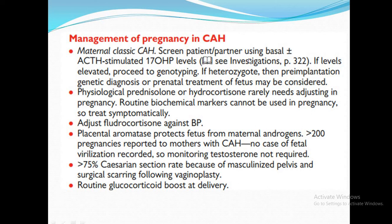For pregnancy management, screen the patient and partner using basal and ACTH-stimulated 17-hydroxyprogesterone levels. If elevated, proceed to genotyping. If heterozygous, pre-implantation genetic diagnosis or prenatal treatment of the fetus may be considered. Physiological prednisolone or hydrocortisone doses do not require adjustment during pregnancy. Fludrocortisone can be used for hypotension. Placental aromatase protects the fetus from maternal androgens, and in mothers with CAH, no cases of fetal virilization are recorded. More than 75% deliver by caesarean section due to a masculinized pelvis.